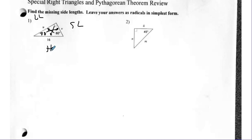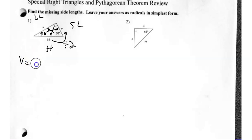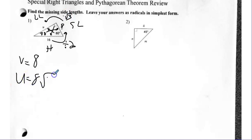I always want to go to my short side. For the hypotenuse, my short side is divided by two. So V is not two — V is eight. And then to go from my short side of eight to the long leg, I'm getting bigger, so I'm multiplying by radical three. So U is eight radical three.